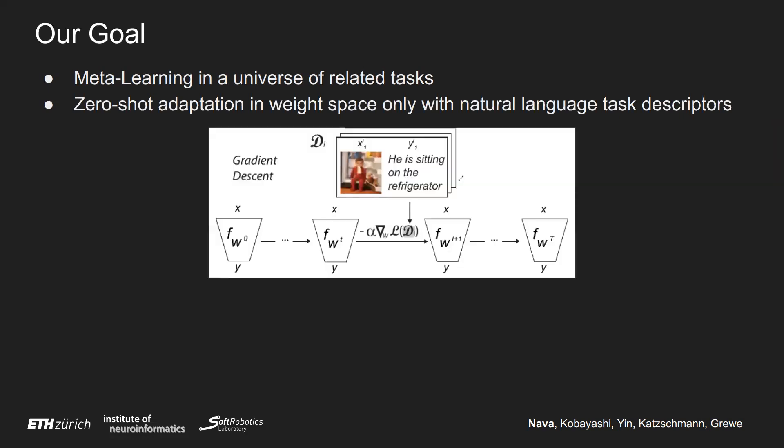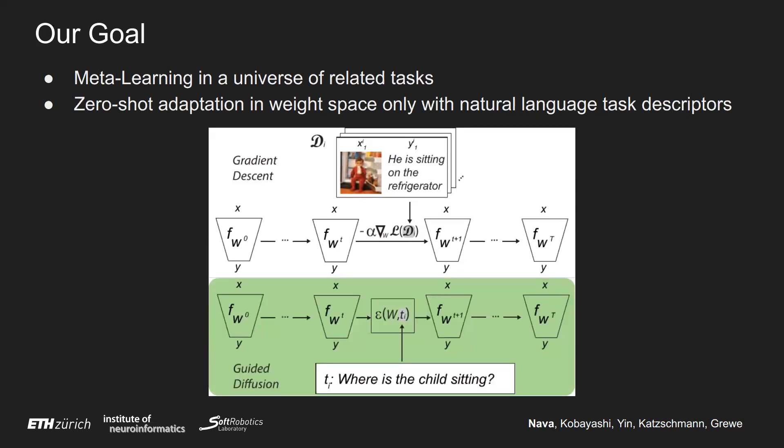In the image, we can see the classic procedure of gradient descent, in which neural network weights of the network FW are adapted over T timestamps. Every timestamp consists of the application of a variation of the gradient descent process, in which we produce a gradient with respect to a dataset DI. In our image classification case, DI would consist of images and labels. What we show in the second half of the image is our newly introduced technique of gradient diffusion over neural network weights.